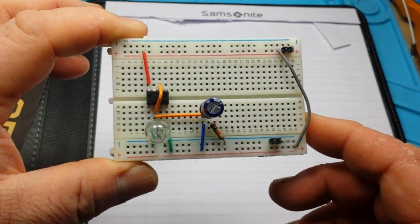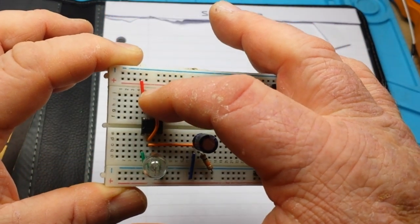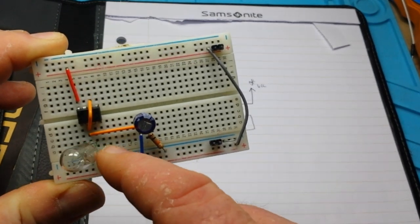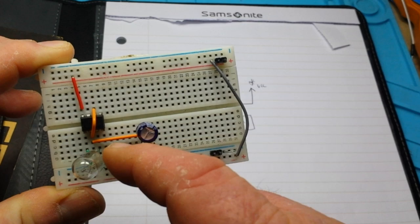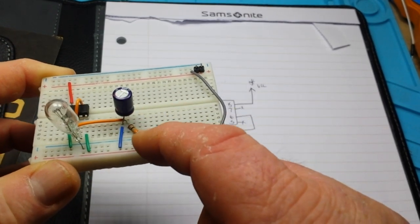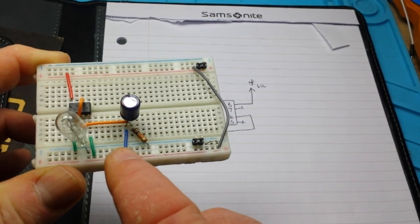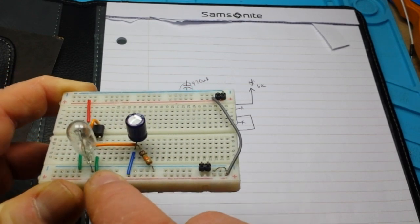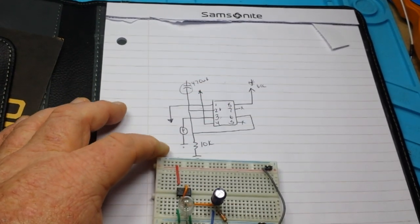So there we have it. We've got pin 8 going to VCC. Pin 1 goes to ground. Pin 2 goes over to pin 6. It also goes over to this capacitor and to ground through our 10k resistor. Capacitor is hooked to VCC. And there's our bulb. And there's our reset.